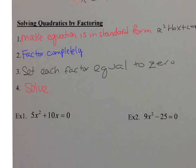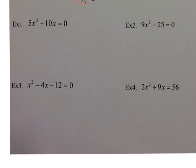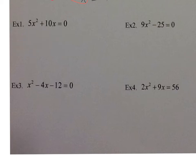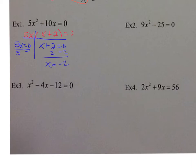Let's take a look at number 1. So number 1 says 5x squared plus 10x is equal to 0. Remember, when you factor, we always look for the GCF first. I do see a GCF. The GCF is 5x, giving us 5x times x plus 2 equals 0. Then you're going to make your t-chart and set each factor equal to 0: 5x equals 0 and x plus 2 equals 0. Divide by 5, x equals 0. Minus 2, x is equal to negative 2.